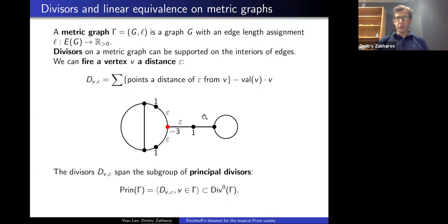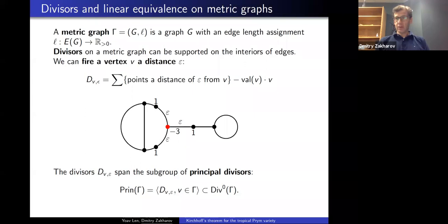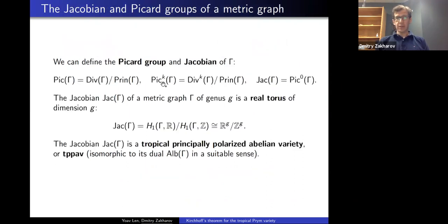The chip firing operation on a metric graph works the same way: you fix a point — which can be a vertex or a point in the interior of an edge — and in every direction from that point you move a chip some equal distance epsilon. You get a divisor of degree zero. The subgroup spanned by such divisors is the group of principal divisors, and the Picard group is the set of divisors modulo principal divisors. Looking at degree-zero divisors gives the Jacobian group.